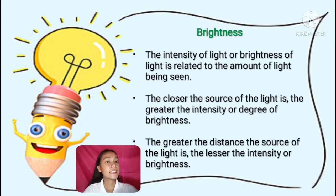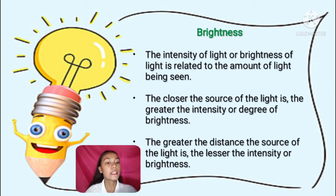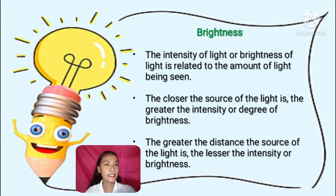Brightness is the intensity of light. Brightness is related to the amount of light being seen. The closer the source of light is, the greater the intensity or degree of brightness. The greater the distance the source of light is, the lesser the intensity or brightness.